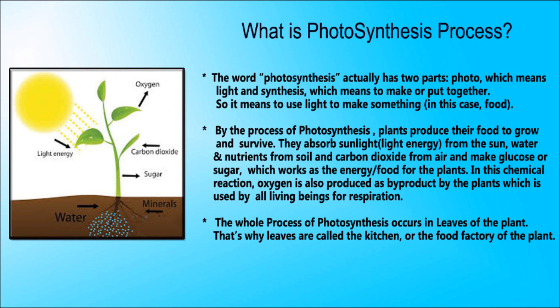They absorb sunlight from the sun, water and nutrients from soil, and carbon dioxide from air, and make glucose or sugar which works as the energy or food for the plants. In this chemical reaction, oxygen is also produced as a by-product by the plants, which is used by all living things for respiration.